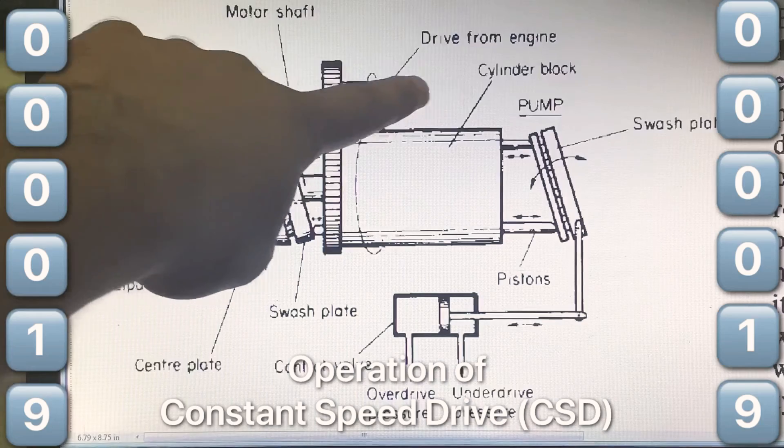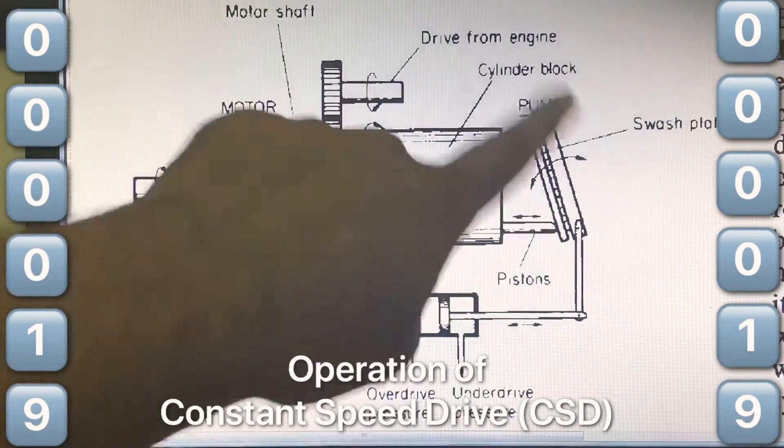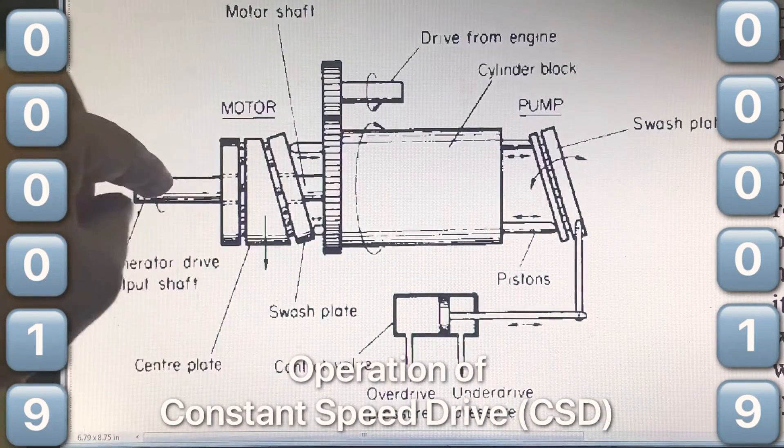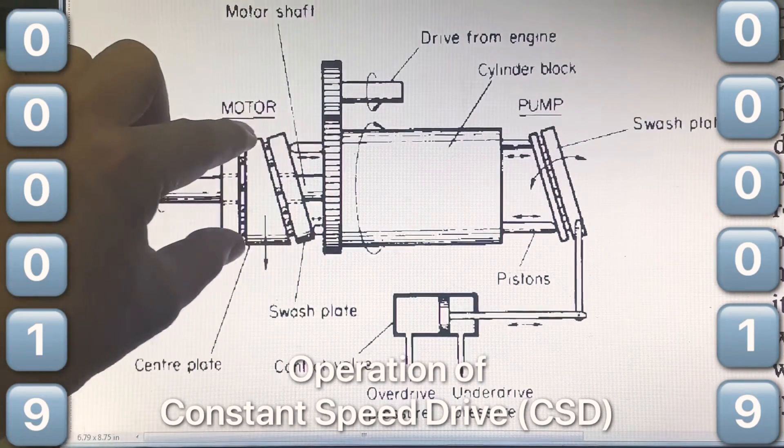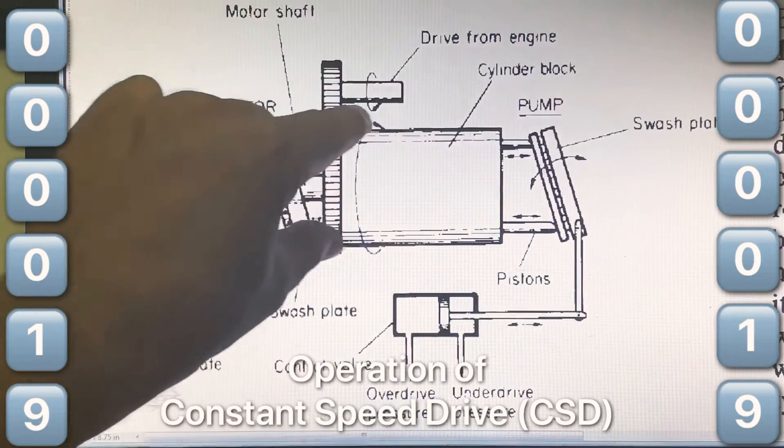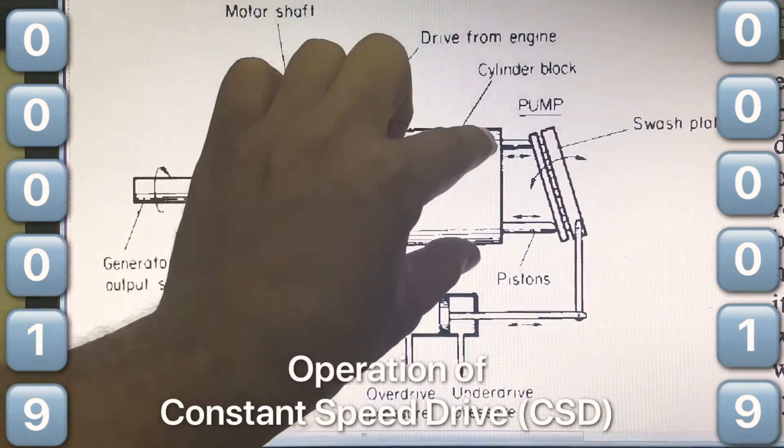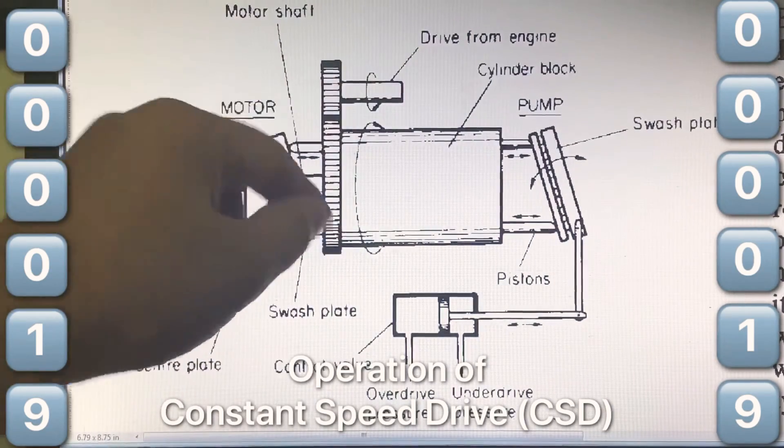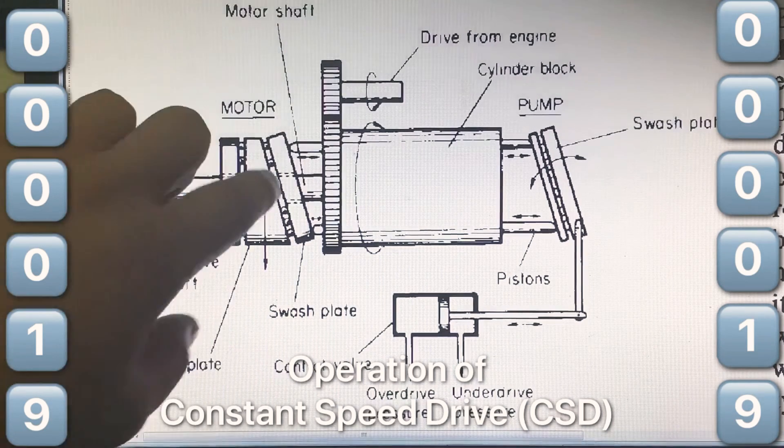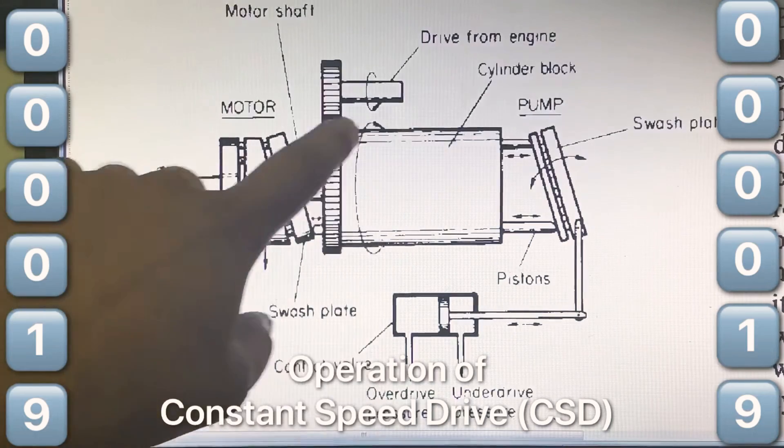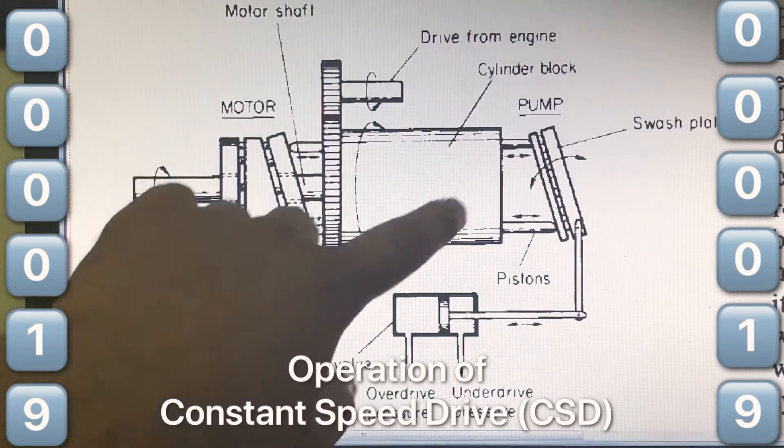When the engine output drive or input to CSD is exactly equal to the required generator speed, then the hydraulic motor is hydraulically locked with the cylinder block. And both this cylinder block and hydraulic motor rotate together. This is called as straight through condition. In which the whole transmission system acts as a fixed coupling.